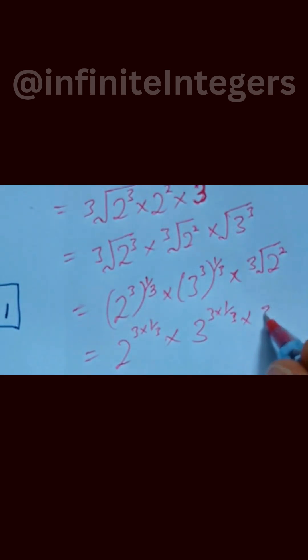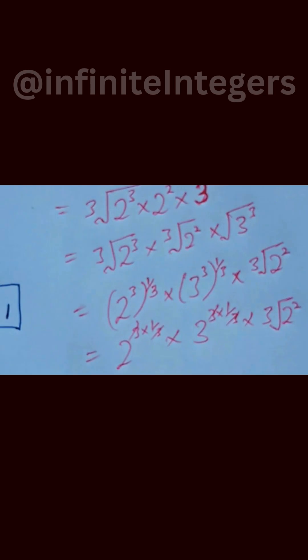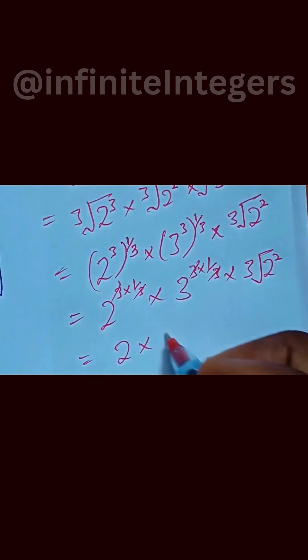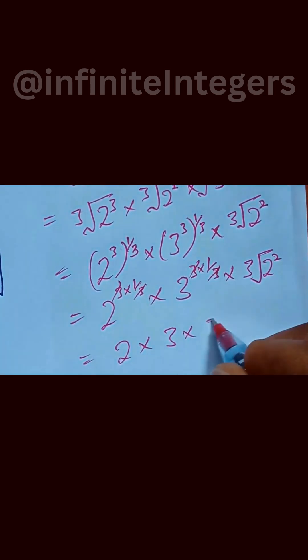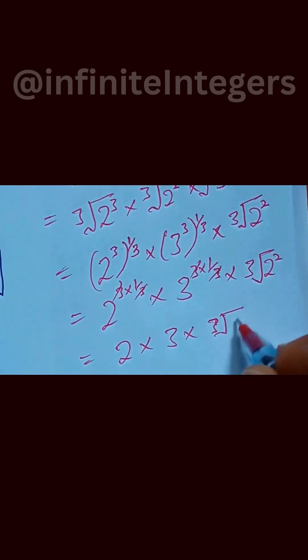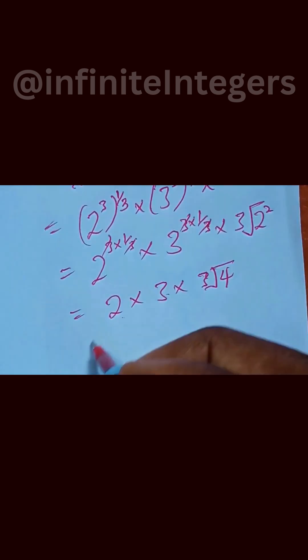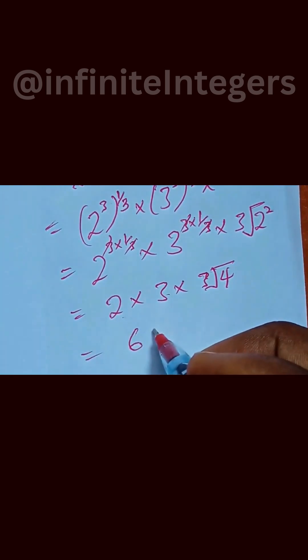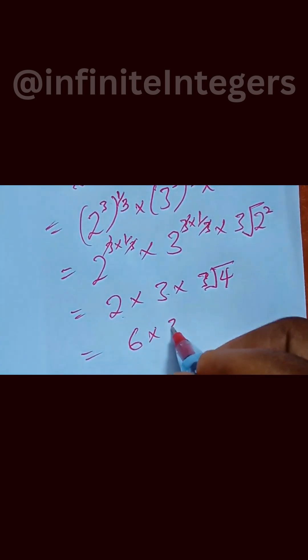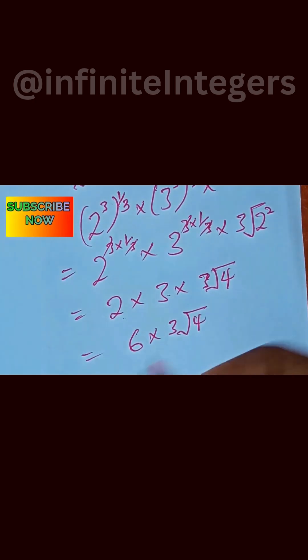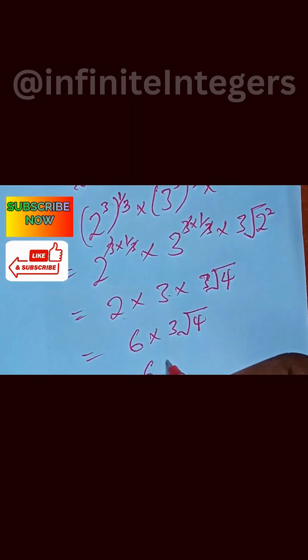We have 3 raised to power 3 multiplied by 1 over 3, multiplied by cube root of 2 squared. The exponents cancel out, giving us 2 multiplied by 3 multiplied by cube root of 4. This simplifies to 6 multiplied by cube root of 4, written as 6∛4.